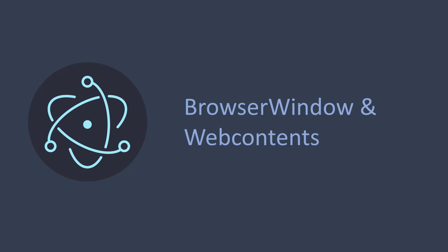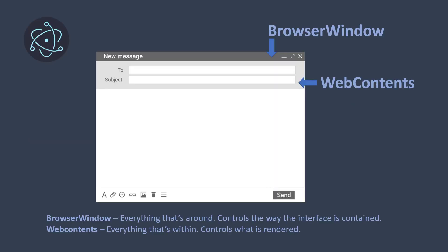This video covers BrowserWindow and WebContents, the two most important objects in Electron programming. With these two objects you can absolutely control all aspects of your interface. We'll look at the capabilities of each, how they connect to each other, how they differentiate from each other, and the core capabilities — what you can do with each of them to make your application better.